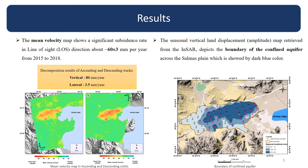Furthermore, we determine the spatial boundary of the confined aquifer in Salmas Plain. We produce a dense network with 55 points and calculate the seasonal amplitude based on the variation of these points between the wet season and dry season. You can see the confined aquifer boundary in the map with dark blue color.